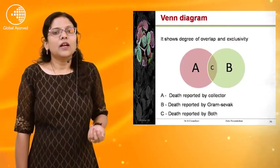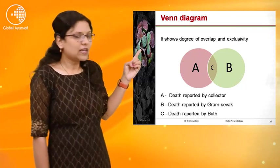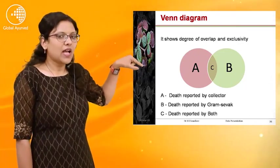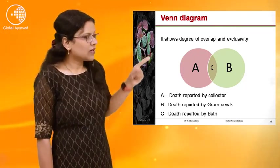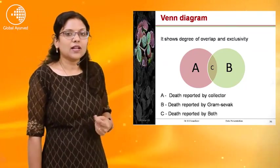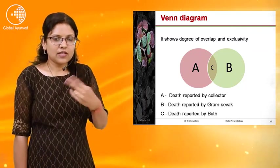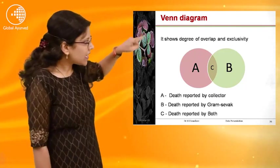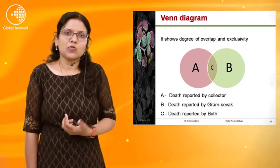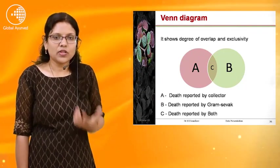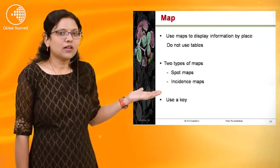The Venn diagram shows the degree of overlap and exclusivity. For example, area A is the total deaths reported by the collector, area B is the total deaths reported by the gram sevak in the district. Since a gram falls within the district, there will be overlapping. The C area represents the area of overlap. In such cases we can use the Venn diagram to show the degree of overlapping and exclusivity.